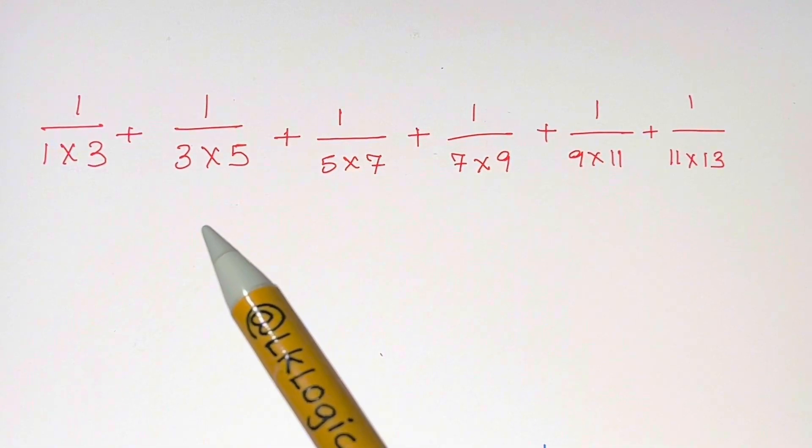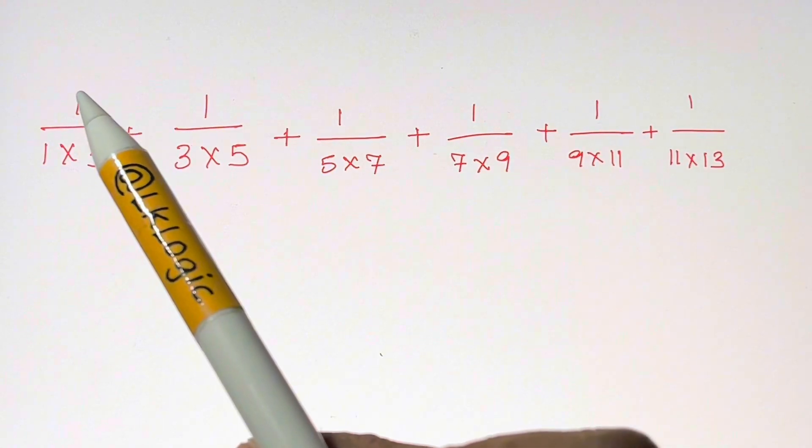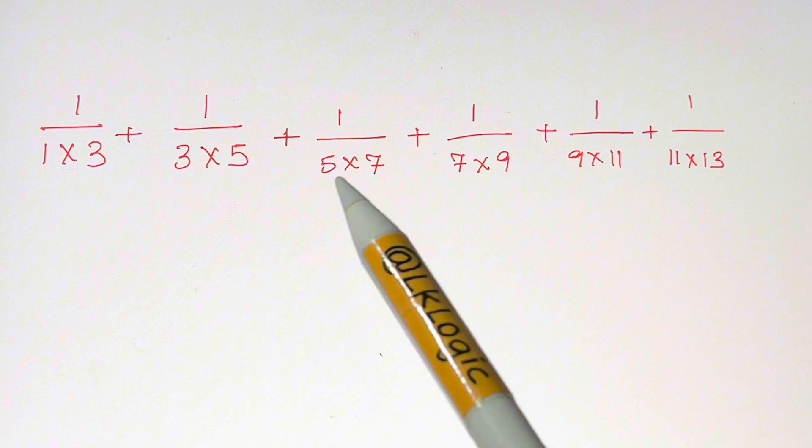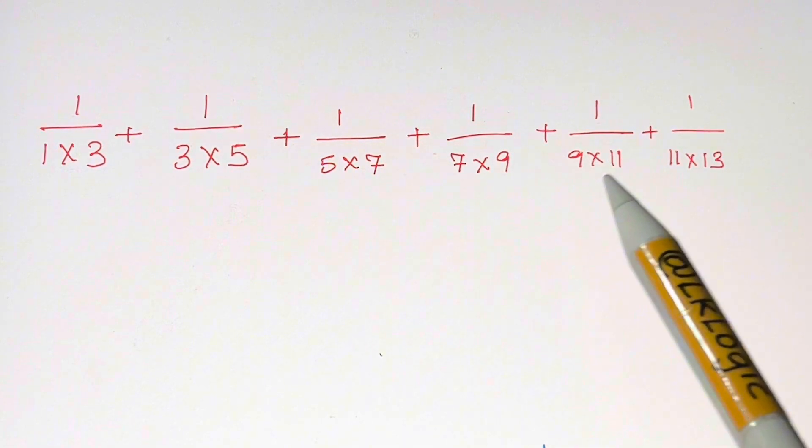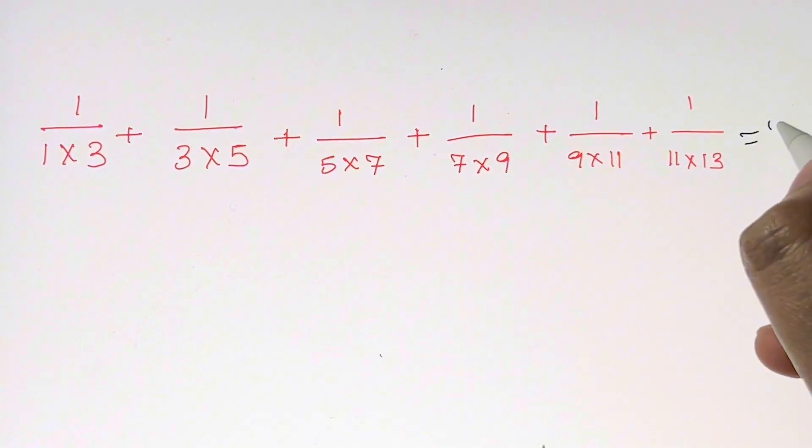Hi guys, I have an interesting question for which I'm going to show you an amazing trick. Whenever you have a question like this: 1/(1×3) + 1/(3×5) + 1/(5×7) + 1/(7×9) + 1/(9×11) + 1/(11×13) and so on, what will be our answer for such questions?